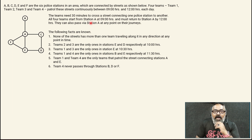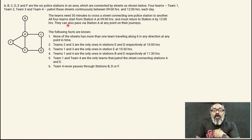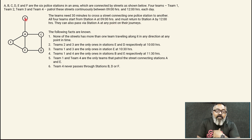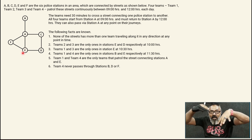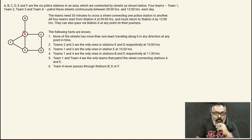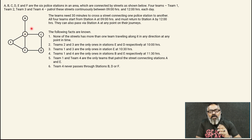All 4 teams start from station A after 9 hours and must return to station A by 12 hours. They can also pass via station A at any point on their journey. So they start at A — if they go to B, the only way is to come back to A. Everybody starts at A, goes somewhere, and has to take 6 journeys — 6 routes — because they're starting at 9 and reaching back at 12.